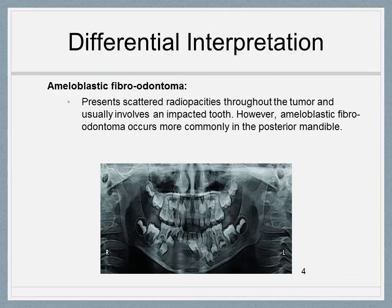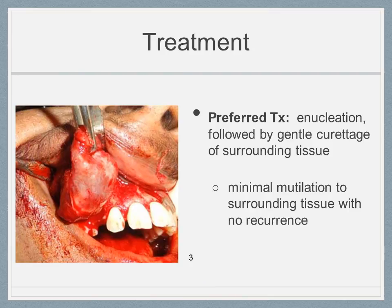An ameloblastic fibroodontoma should also be considered a differential for an AOT due to the scattered radiopacities seen throughout the tumor and the involvement of an impacted tooth. However, an ameloblastic fibroodontoma occurs more commonly in the posterior mandible while an adenomatoid odontogenic tumor occurs two-thirds of the time in the anterior maxilla. It should also be noted that the differentials were listed in order of likelihood. Enucleation of the well-encapsulated lesion followed by gentle curettage of the surrounding tissue allows for minimal mutilation with no recurrence.